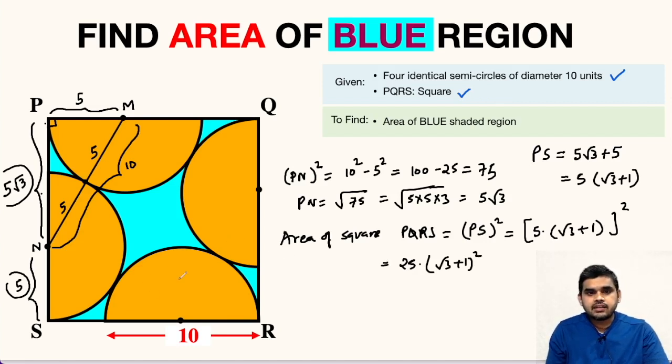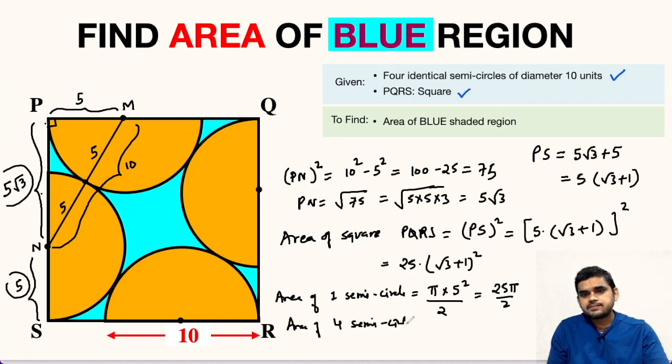Now we need to find the area of all the semicircles. So area of one semicircle will be equal to pi times the square of radius, radius is 5, so 5 square divided by 2 because it is a semicircle. So we can write 25 pi upon 2 square units is the area of one semicircle. So area of 4 semicircles will be how much? 4 times 25 pi upon 2. We can cancel this 2 times. So this will be 50 pi square units.